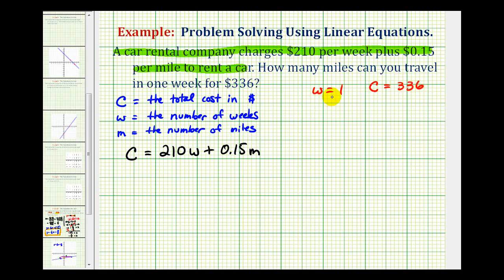So now we'll substitute these values into the equation and solve for the unknown, which will be M, the number of miles. So we would have 336 equals 210 times one plus 0.15M. Of course, 210 times one is just 210.